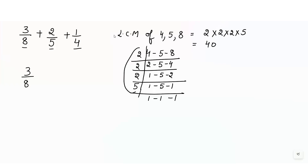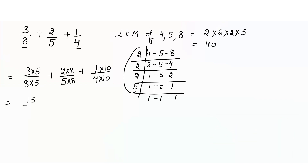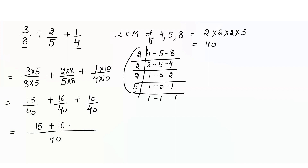We write down the fraction again: 3 by 8 plus 2 by 5 plus 1 by 4. We need to make all denominators equal to 40. We times 8 with 5 to get 40, multiplying the numerator by 5 as well. We times 5 with 8 to get 40. We times 4 with 10 to get 40. So we get 15 over 40 plus 16 over 40 plus 10 over 40. Since the denominators are the same, we write the denominator once: 15 plus 16 plus 10 equals 41 over 40. Since 41 is odd and 40 is even, we cannot simplify further. The answer is 41 over 40.